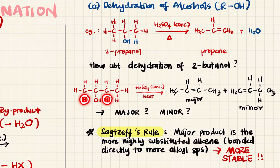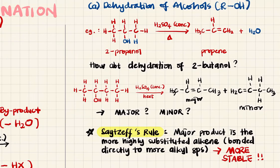Depending on which hydrogen we remove, the double bond will be at a different position. If we remove these two atoms, the double bond will be here; if we remove those two, it will be there. That means you will get more than one possible product. When you have more than one possible product, one will be the major product and the other will be the minor. To determine which is which, we use Zaitsev's rule.